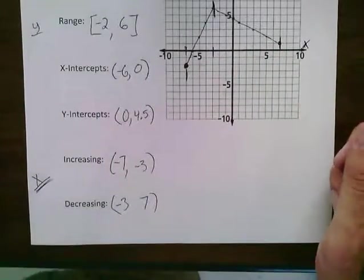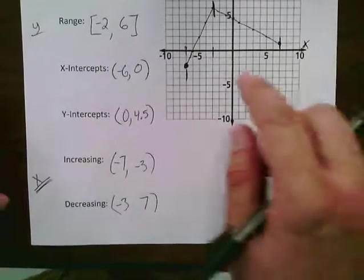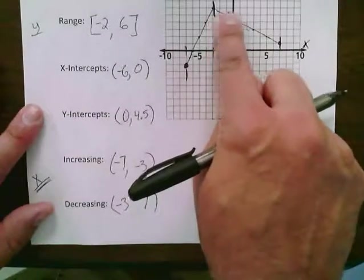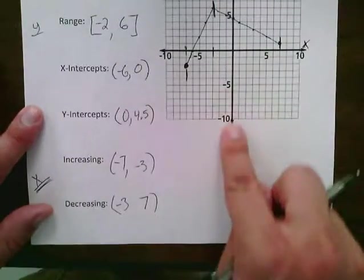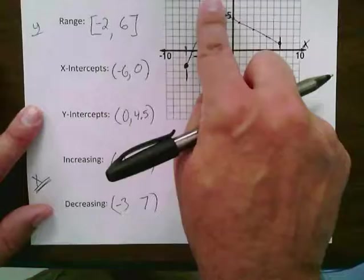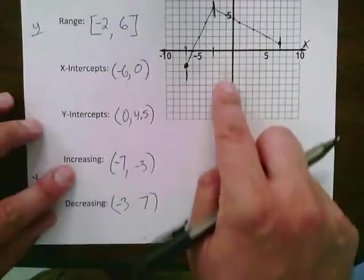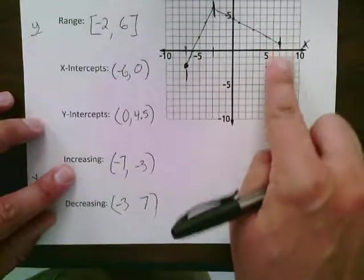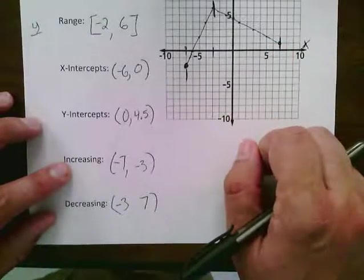So the tough part with increasing and decreasing is you only care about x. A lot of kids will get trapped into talking about y. We don't care about where we are at on the y-axis. Just from what x value to what x value. The same with decreasing. What x value to what x value are you decreasing?